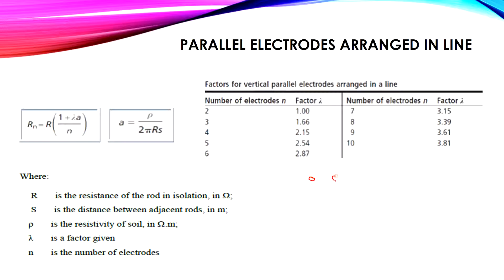If the electrodes are arranged in a line — electrode, electrode, electrode, connected by conductors — the same formula applies: R = R₁ × (1 + λA/n), where n is the number of electrodes and λ is obtained from the table. For three electrodes in a line, λ = 1.66.